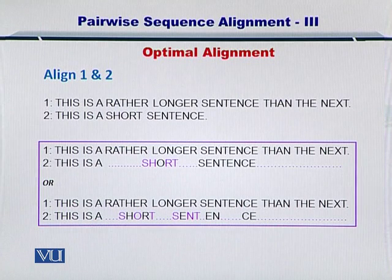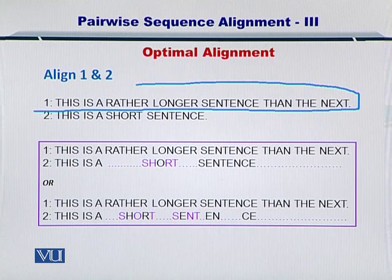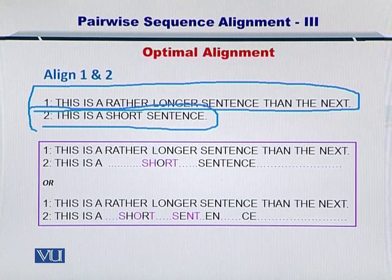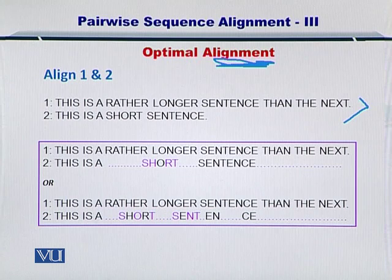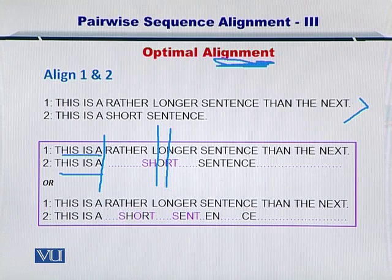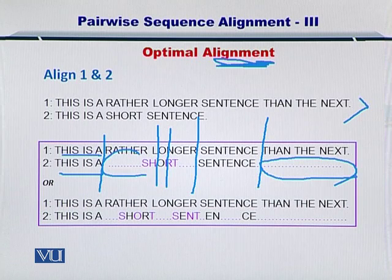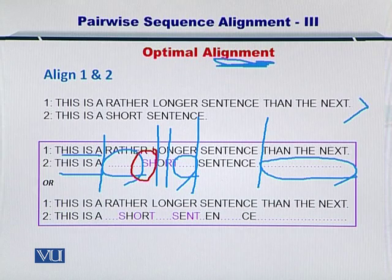Now I'll come to optimal alignment. Let me give you an example of what an optimal alignment is. Consider the sequence 'This is a rather longer sentence than the next.' The second sequence is 'This is a short sentence.' If we try to align these two sequences, we have two possibilities. In the first one, 'this is a' will be a perfect match, then O will match O and 'sentence' will match 'sentence.' For the rest, you can insert gap dots. Of course, if you look carefully, there are a couple of mismatches as well.